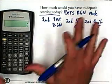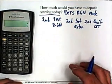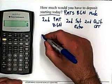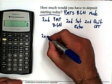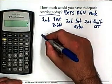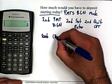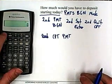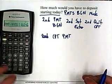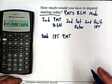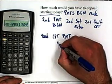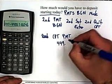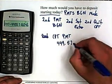Since all we want to do is recompute the payment, we'll leave all the numbers as before and just go CPT PMT. So if the payments are made at the beginning of the period, we would have to pay $449.57.